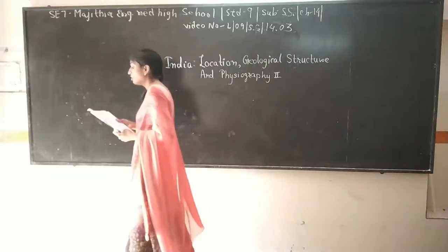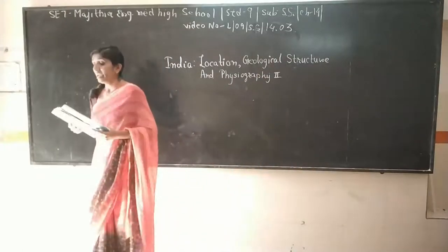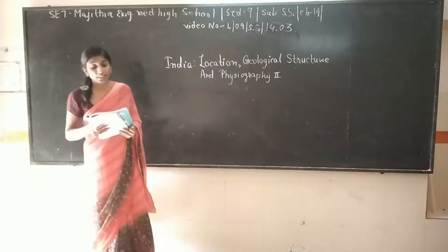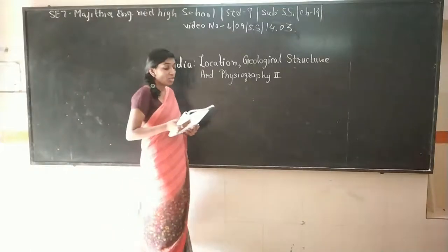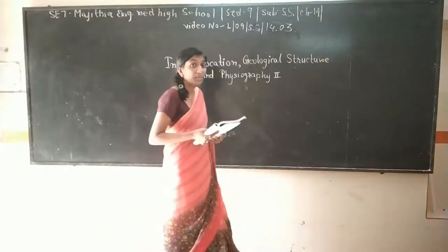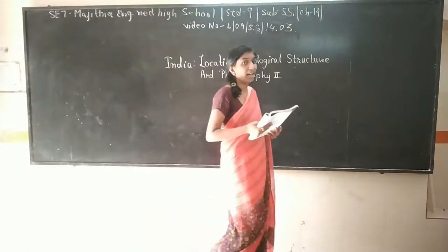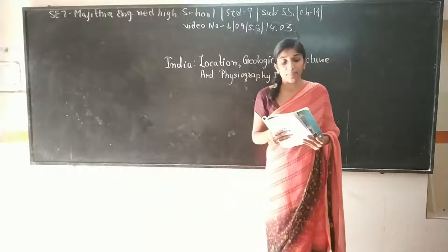Generally, alluvial soil is very important and fertile. It is found in Punjab, Uttar Pradesh, Bihar, and West Bengal.